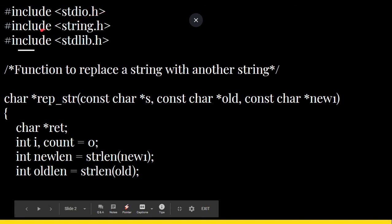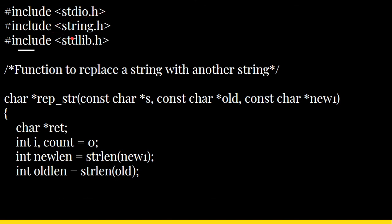The program starts with the usual includes: stdio.h, string.h, and also stdlib.h because we are using some standard library functions. We declare the function first and then write the main program as we normally do in C programming.